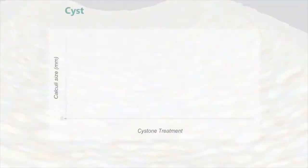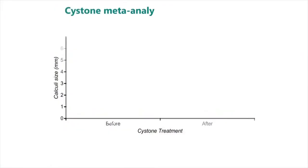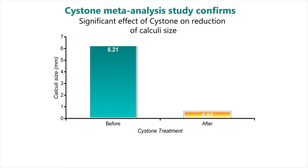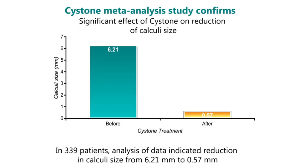Cystone exerts spasmolytic action to enable smooth expulsion, keeps the kidneys and urinary tract flushed, and prevents post-operative recurrence of calculi. In 339 patients, analysis of data indicated a reduction in calculi size from 6.21 mm to 0.57 mm.